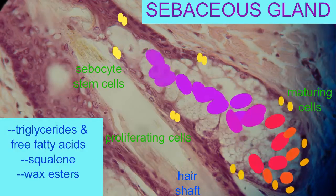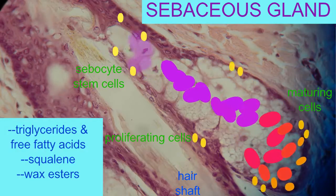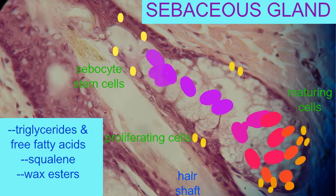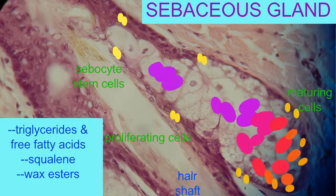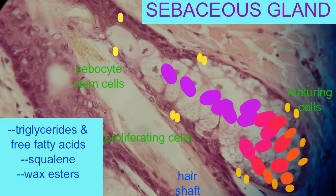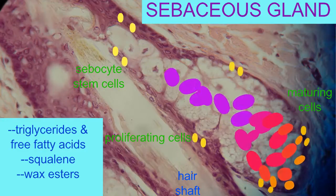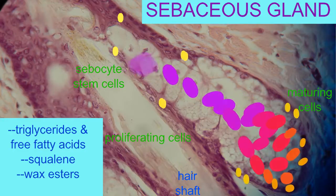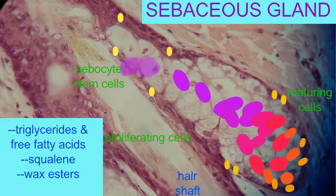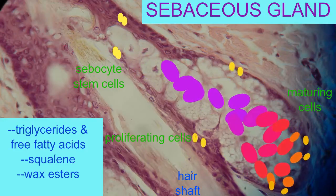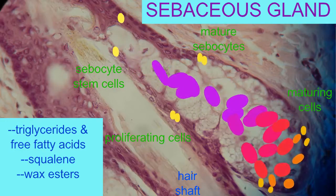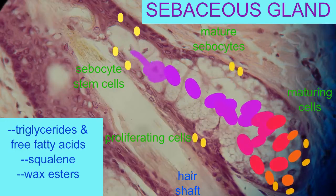these sebocyte lipids include much less cholesterol and unique squalenes and wax esters, which are only produced as a secreted product in sebaceous glands in the human body. As the maturing cells accumulate these lipids,